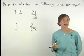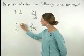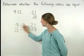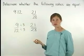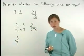Now let's write each fraction in lowest terms. If we divide the numerator and the denominator of 9 twelfths by 3, we get the equivalent fraction 3 fourths, which is in lowest terms.